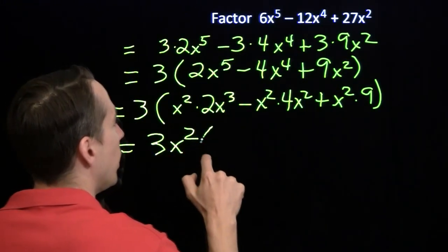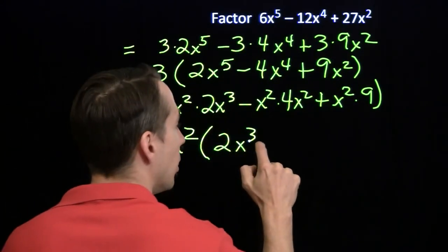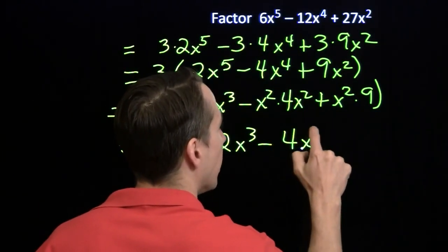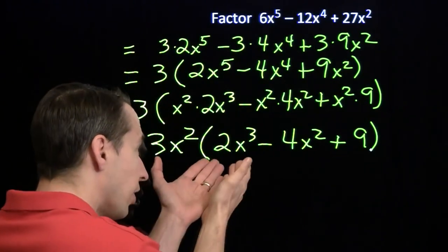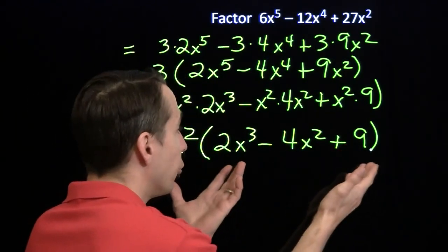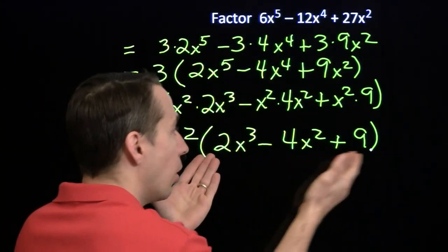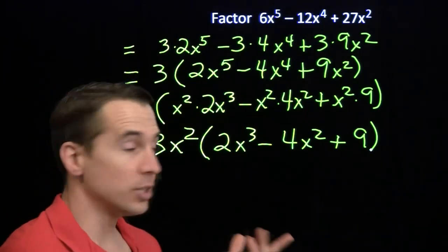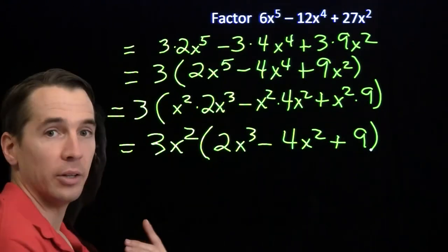And I have 3x squared, and what's left inside is the 2x cubed minus, have to pay attention to the signs, 4x squared plus 9. Now what's left inside here, 2x cubed, the minus 4x squared, the plus 9, there's no factor, there's nothing else that I can factor out. There's no common factor to all these. I don't have an x in all three. There's nothing besides 1 that divides into 2, 4, and 9. So I can't pull anything out like I pulled out the 3.